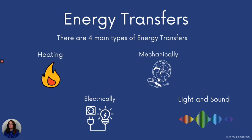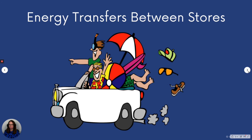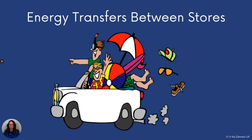What we need to be able to do is recognise these within images that we're shown. We've got a simple one here of these people in a car with lots of objects. You need to know where the stores are and what the transfer is that occurs between them. For example, the fuel hidden in the petrol or diesel tank in the car is a chemical energy store. The energy is transferred from the chemical energy store by heating to the kinetic energy store, because the car then moves forward — and we know that kinetic energy is sometimes called movement energy.